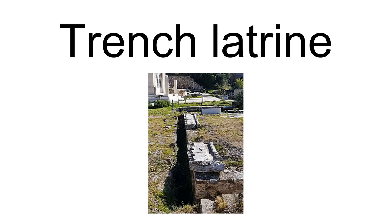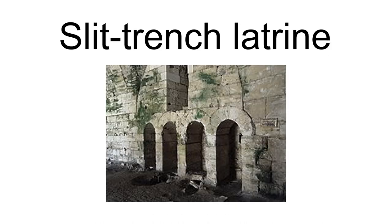In a location without longer-term sanitation infrastructure, such as for emergency sanitation, a trench latrine is a workable solution. It typically consists of a pit or a trench in the ground, 4 feet (1.2 meters) to 5 feet (1.5 meters) deep and 4 feet (1.2 meters) to 20 feet (6.1 meters) long.